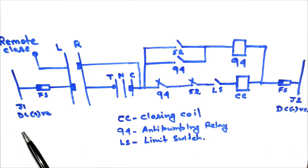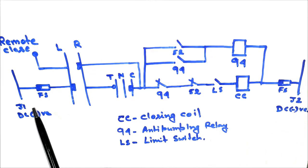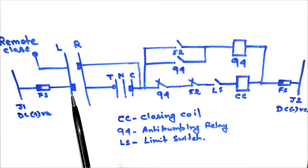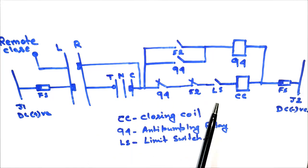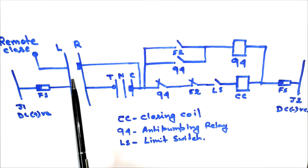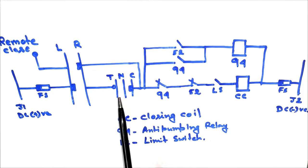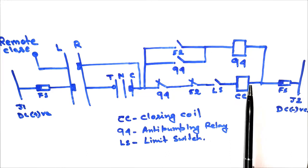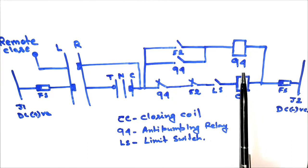This is the closing circuit of the circuit breaker. Here we have a positive bus and a negative bus, and both buses are connected by a fuse. Here we have a local-remote selector switch contact — the local contact from which local operation of the circuit breaker can be done, and the contact for remote operation. Here is the local TNC switch, that is the trip-neutral-close switch contact. This is the closing coil of the circuit breaker, and in parallel with the closing coil path we have the anti-pumping relay.